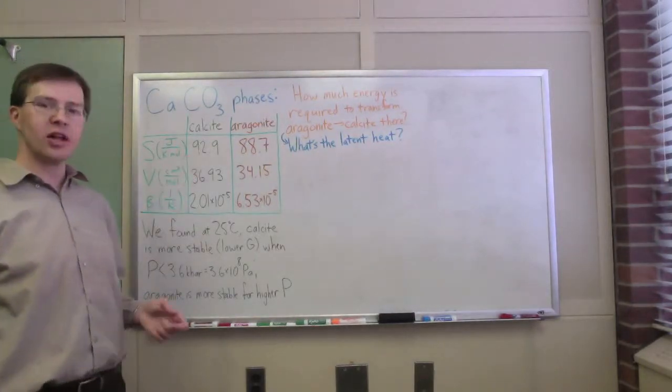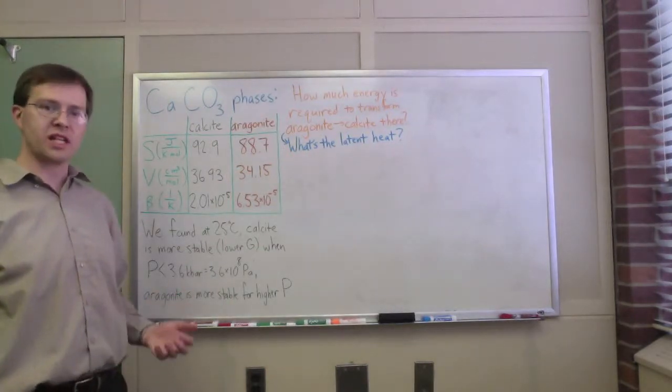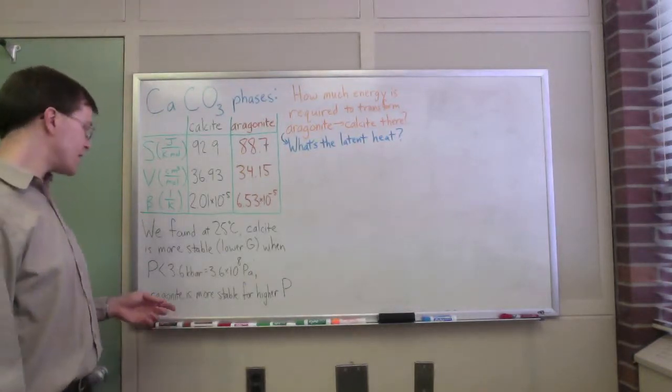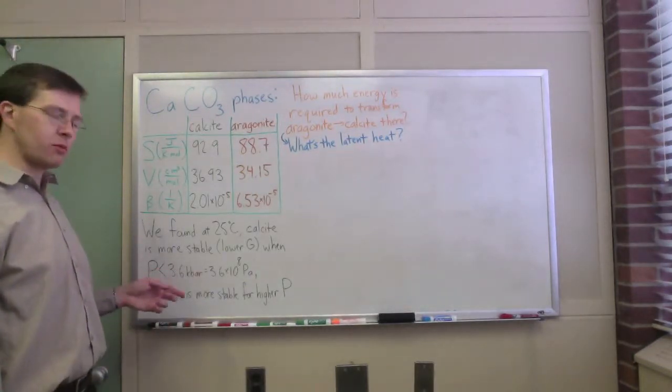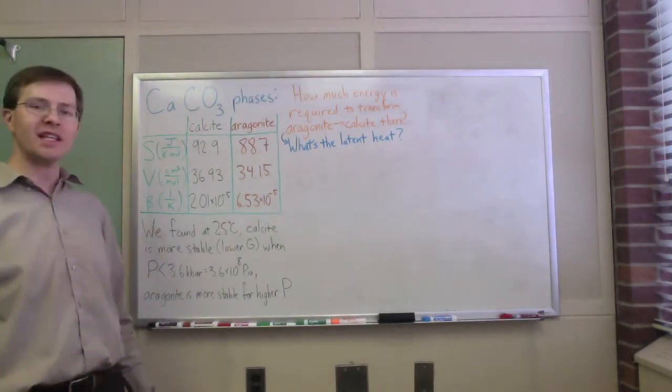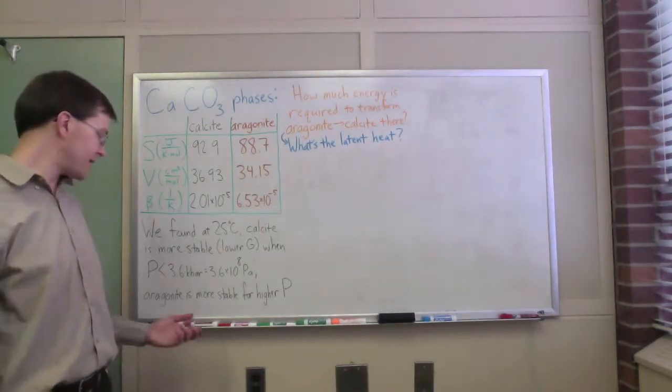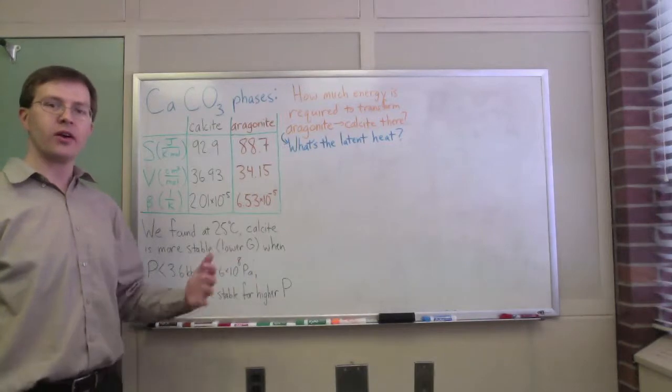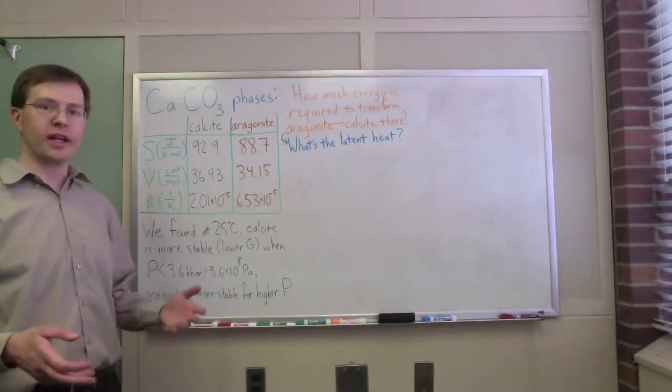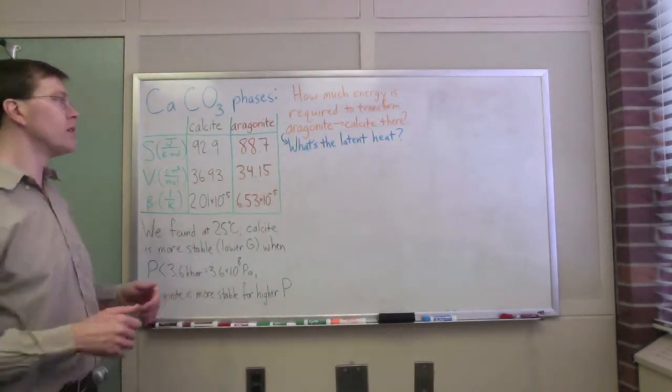In class we figured out that the Gibbs free energy for calcite is lower than for aragonite at standard temperature and pressure, so calcite is the more stable form. We found that calcite remains most stable all the way up to 3.6 kilobars of pressure—that's 3.6 times 10 to the 8th pascals, thousands of atmospheres. Above that pressure, aragonite is more stable.